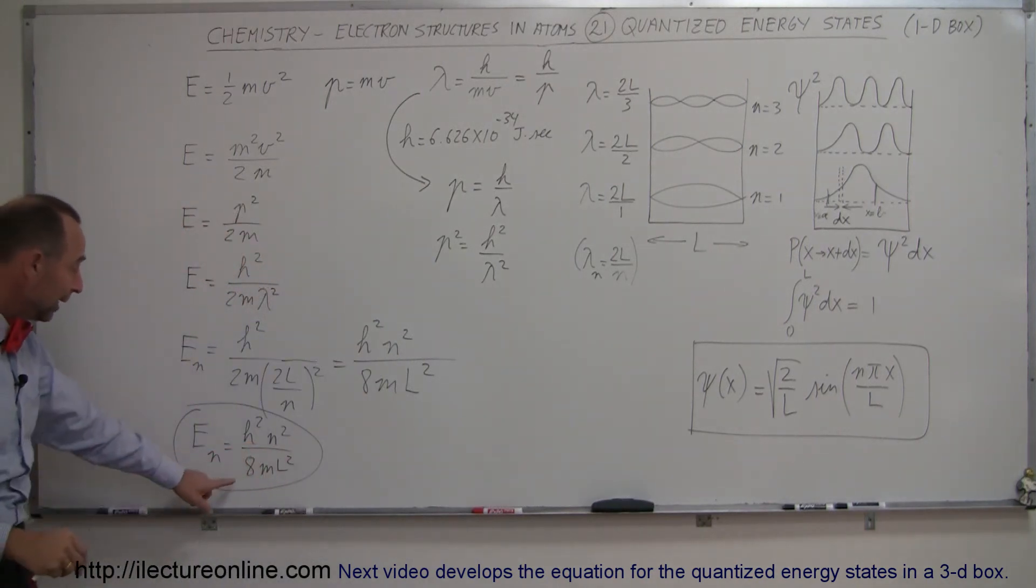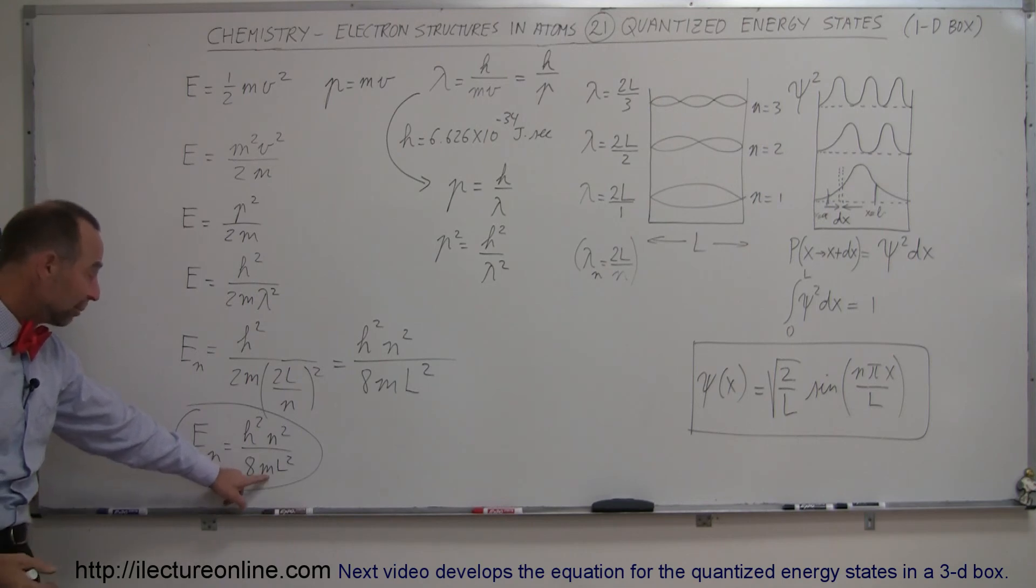Notice that h is Planck's constant right there. n is just the energy level, 1, 2, 3, 4, so forth. 8, just a constant. m is the mass of the particle, like the mass of the electron. And l is simply the length of the box.